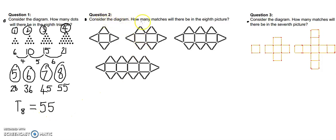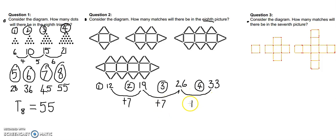The next question. Consider the diagram. How many matches will there be in the eighth picture? Now, once again, I have counted them already. In the first picture, I have twelve. In the second picture, I have nineteen. In the third picture, it's gotten bigger again, I've got twenty-six. And in the fourth picture, I have thirty-three. So, what's changing in each one? Over here, I'm adding seven. Does that pattern continue? Yes, I'm adding seven again. And look, adding seven again.